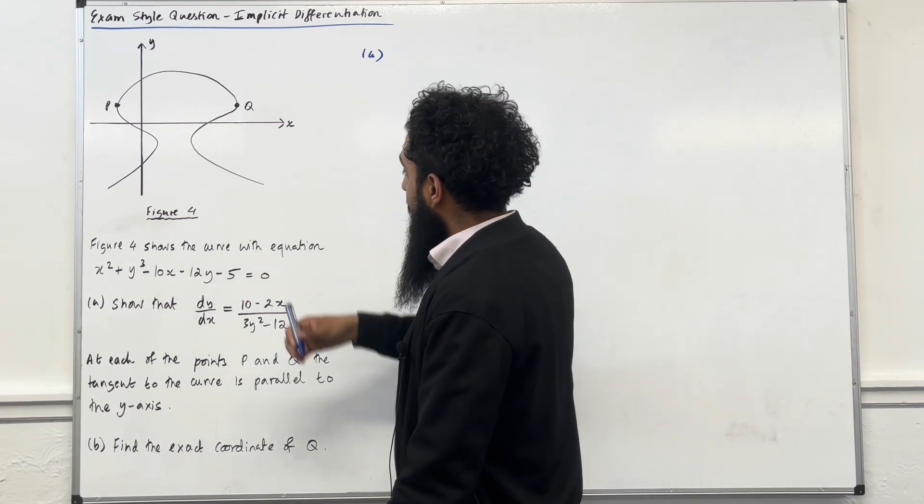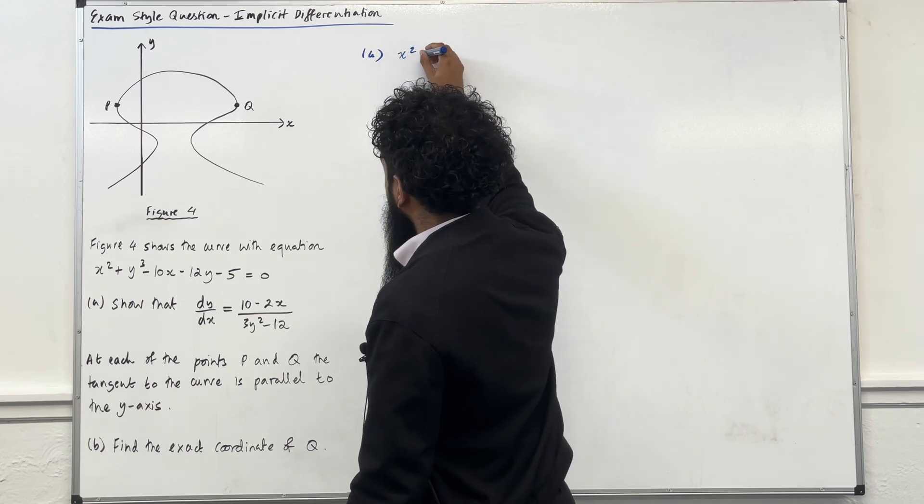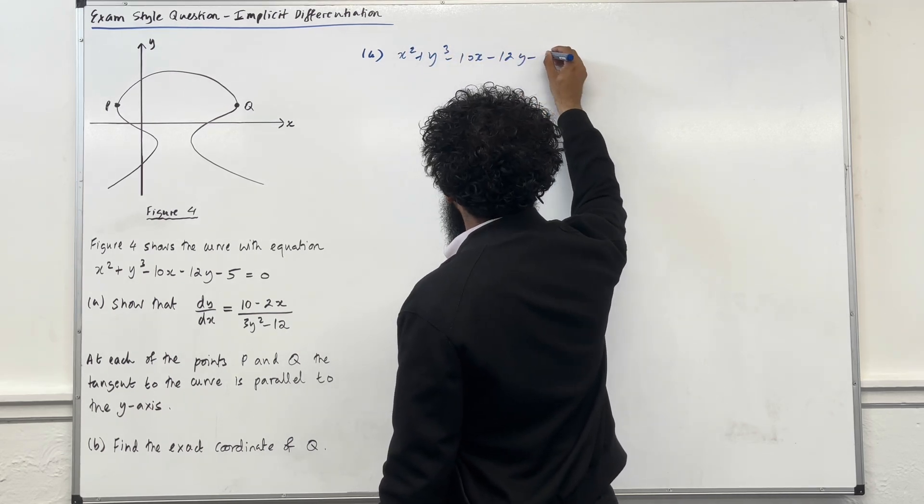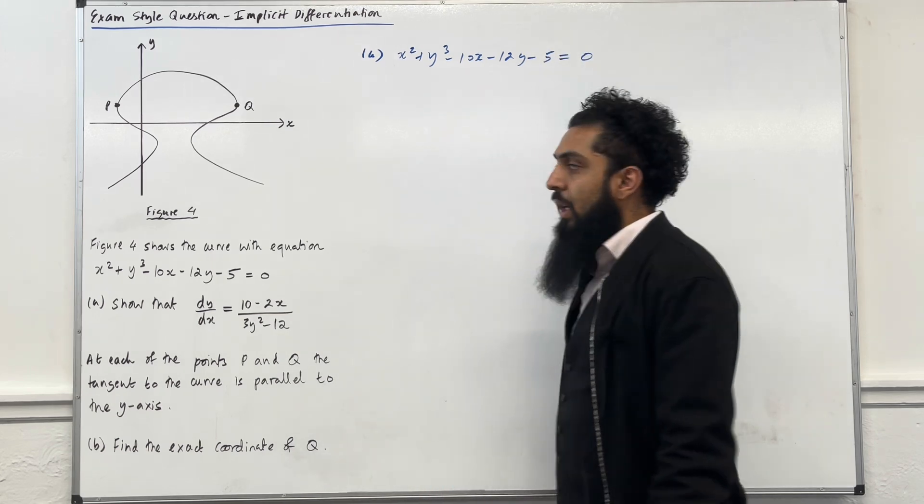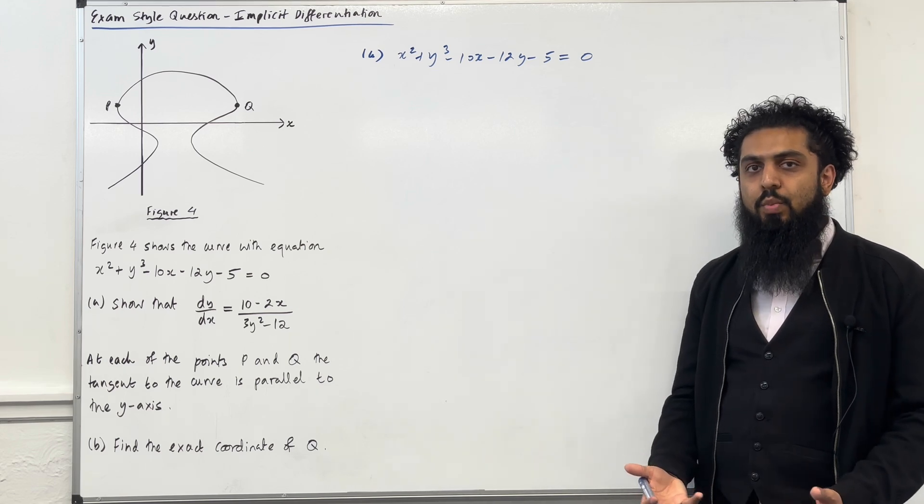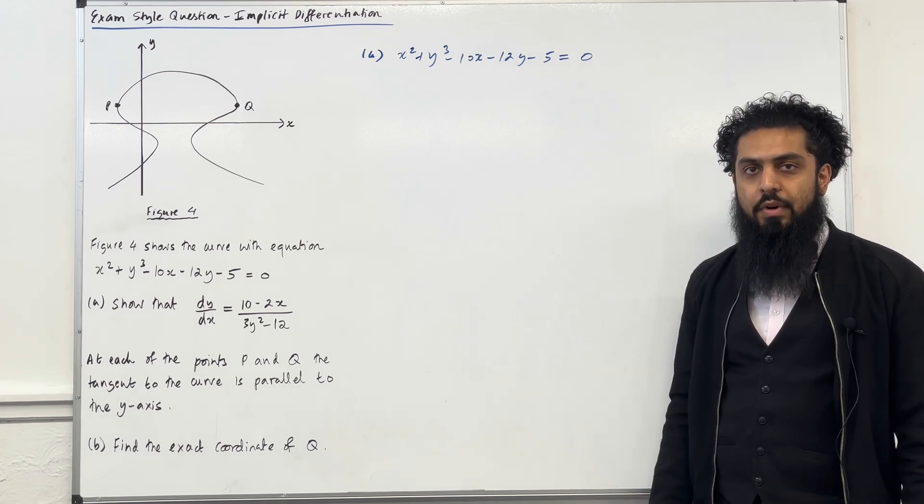Right, so my implicit equation in the question is x squared plus y cubed minus 10x minus 12y minus 5 equal to 0. We want to differentiate this implicit equation. Because it's an implicit equation, we have to use the technique of implicit differentiation.